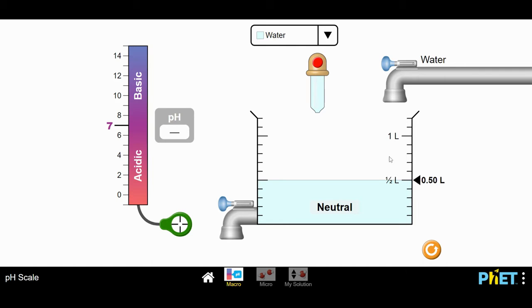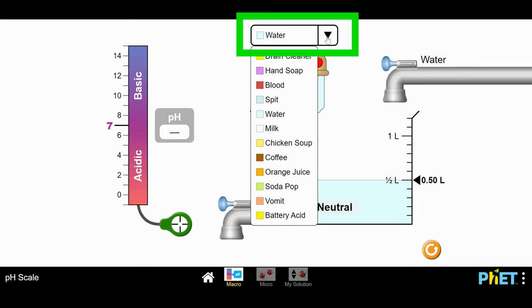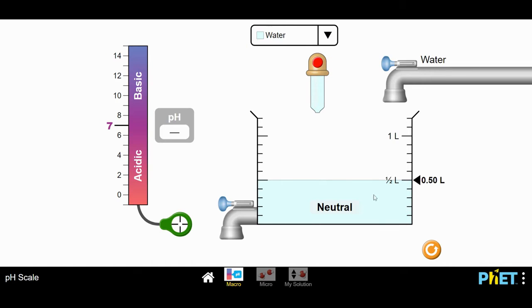All right, so what just happened is we filled a container with some water. We can choose different liquids here. We're going to leave water in here right now. If I want to drain the container, I can open this valve to drain the container, or I can add some water back in like this.